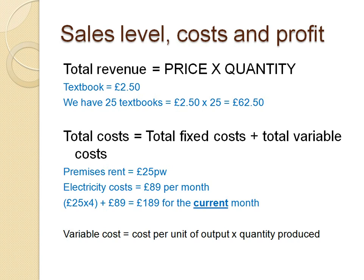Total cost equals total fixed cost plus total variable cost. Fixed costs don't change as output changes — for example, renting premises at £25 per week is fixed. Variable costs change with output — for example, electricity at £89 per month. So total this month is £25 × 4 weeks + £89 = £189. Be careful in exams: if costs are given per week, multiply by four to get monthly figures. Variable costs will differ month to month.